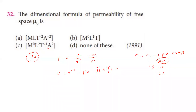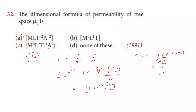So μ₀ equals MLT⁻² times L² divided by L²A², giving MLT⁻²A⁻². The dimensional formula of permeability of free space μ₀ is MLT⁻²A⁻², and the first option is the correct answer.